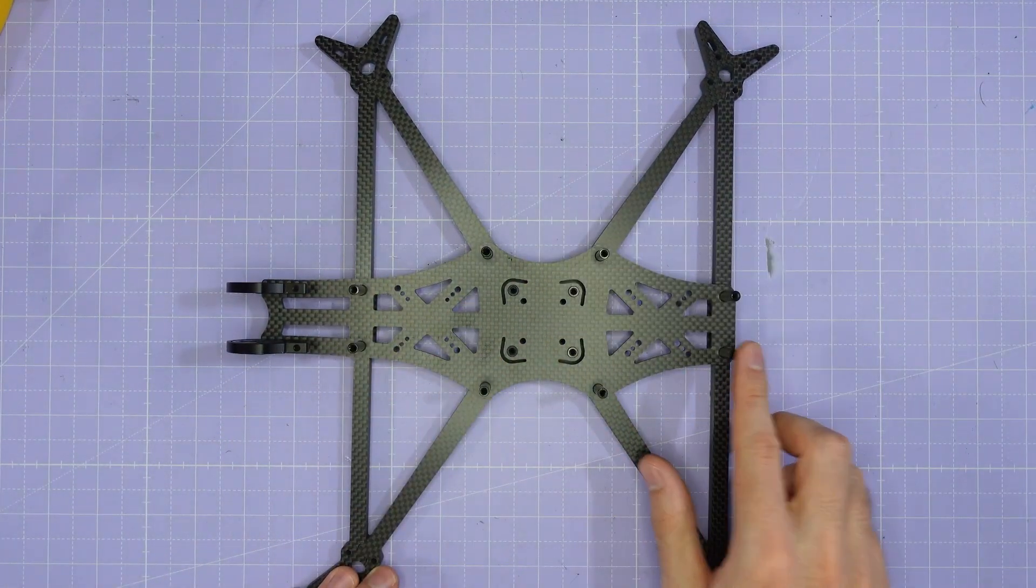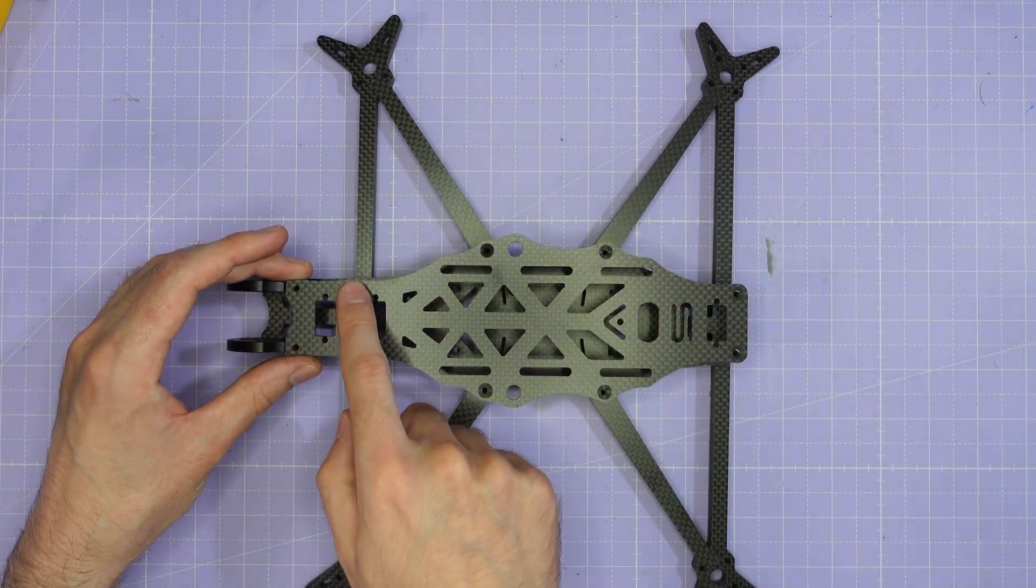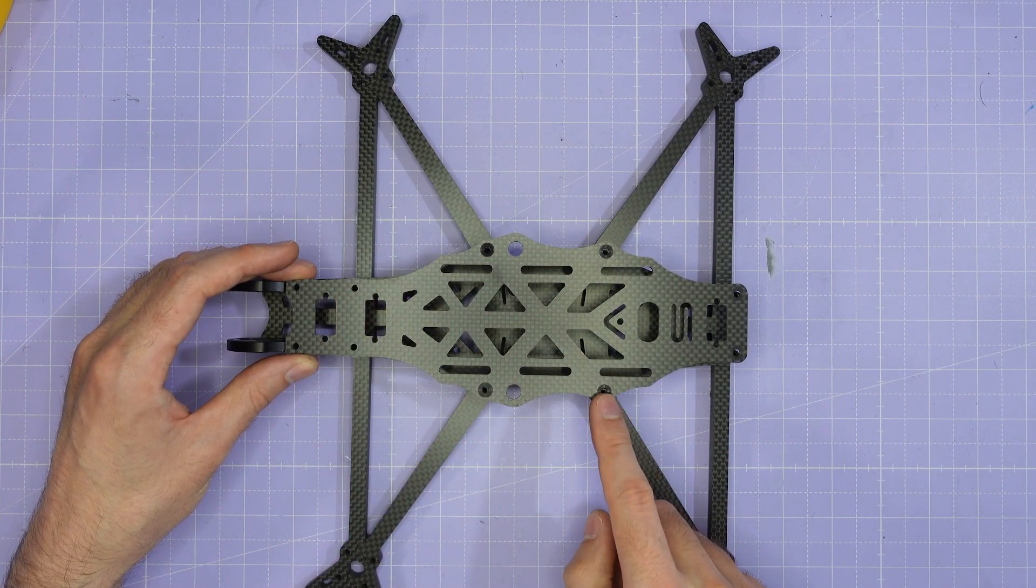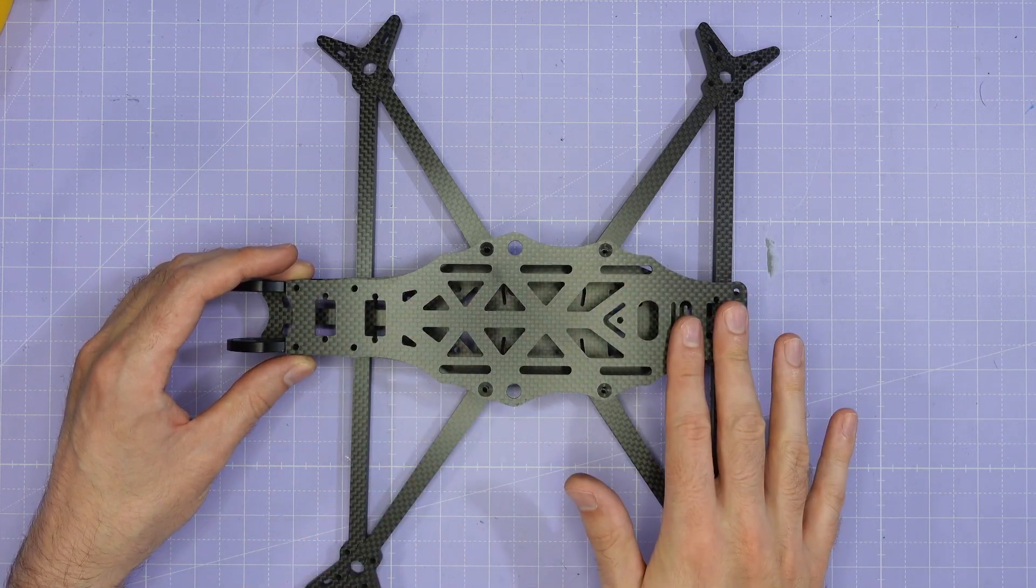Once all the standoffs are in place you can put the top plate on. The top plate is secured by four M3 by 8 millimeter button head screws and six M3 by 6 millimeter countersunk screws so you can just go ahead and install all of those and that closes up the top plate.